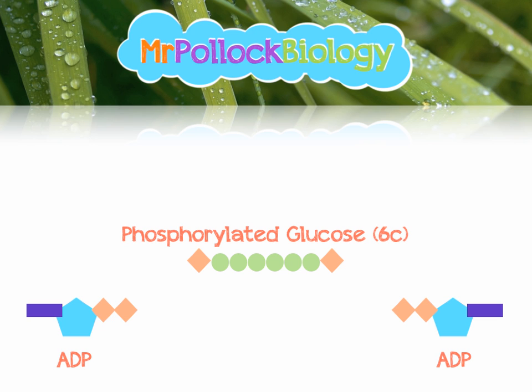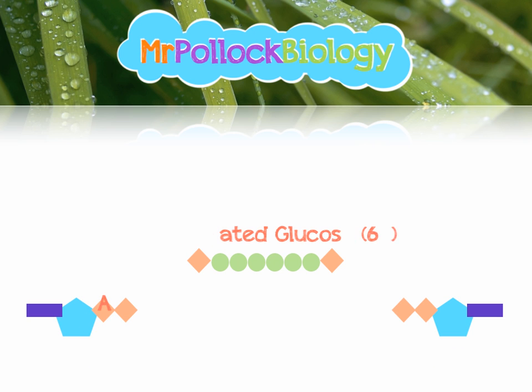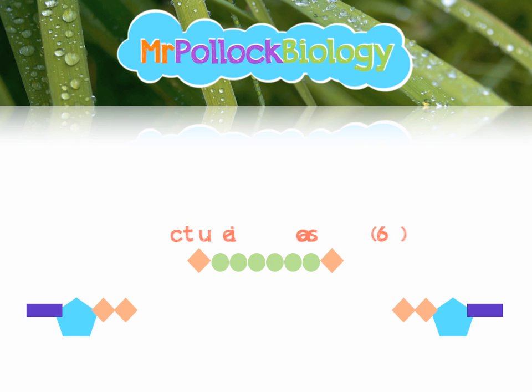Now, phosphorylated glucose has a couple of different names depending on who you ask. Some people call it phosphorylated glucose, some call it activated glucose, and some call it fructose-1,6-bisphosphate, which is probably the most correct. But realistically we can just think about it as phosphorylated glucose. Thinking of it that way helps us remember that glucose has had two phosphate groups added onto it, and that the investment of phosphate came from ATP.